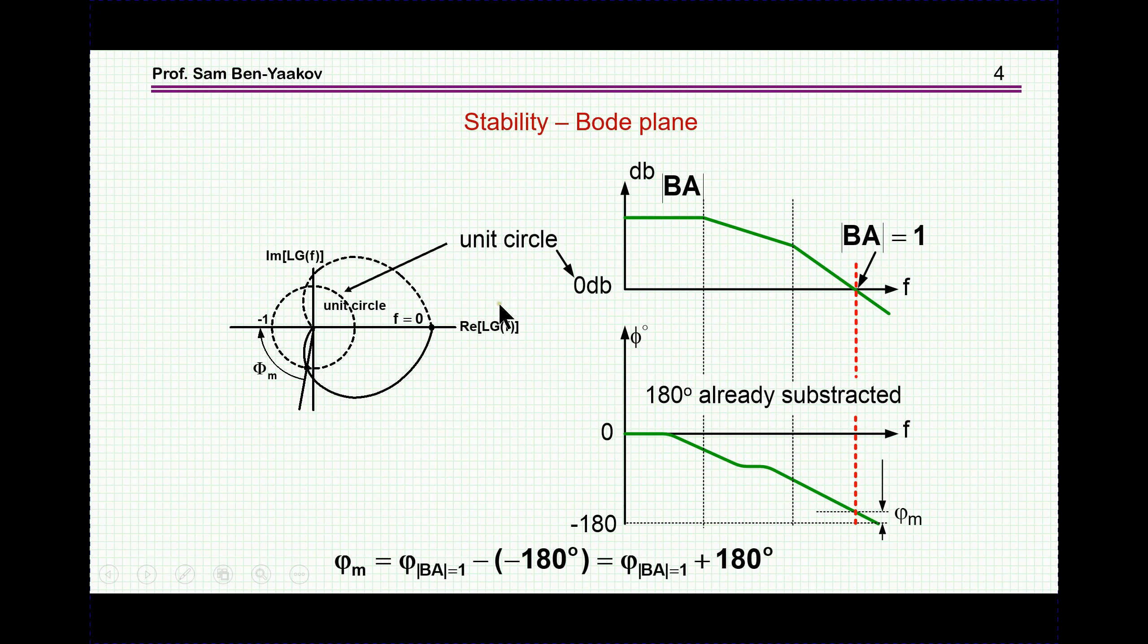Now, this unit circle translates into the 0 dB line here in the Bode plots. So this is just separating this into two parts. Actually, the amplitude, that is the vector, and the phase, the phase of each one of the points. And then the phase margin will be the difference between the actual phase where we penetrate the unit circle, which is the 0 dB here, and 180 degrees. This is 180 degrees. So this is, in a nutshell, the Nyquist stability criteria and how we represent it by Bode plots.